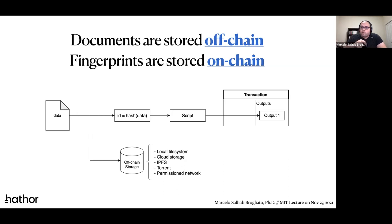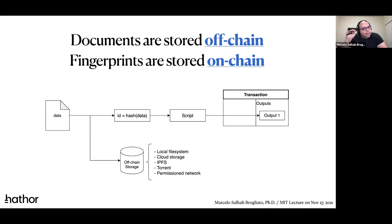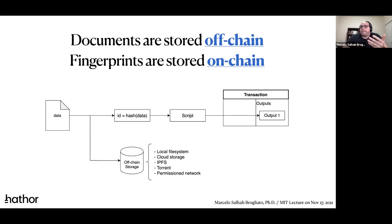So the blockchain acts as a record of all the hashes of transactions — for example, all entries into a building. You can always audit and confirm the information, but you don't store the full information like the time, the probability that Carlos is Carlos, and so on. That stays in your own database or file. What goes to the blockchain is very light information — the hash, which is a compression of the full information. Any party can check if you are cheating by recalculating the hashes and comparing them.